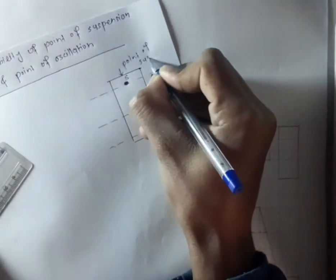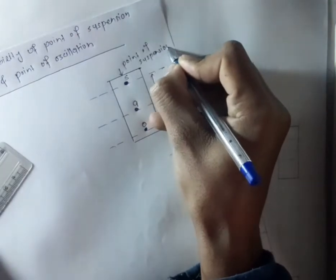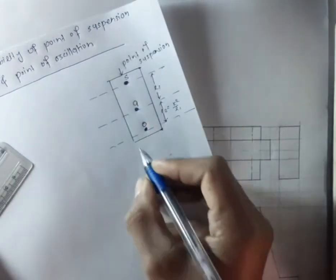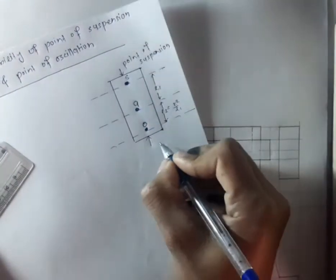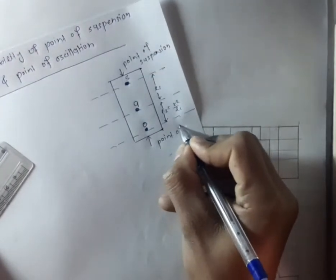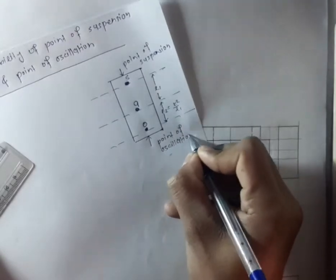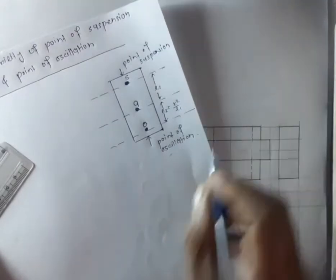S is the point of suspension, O is the point of oscillation, and Z is the center of gravity.